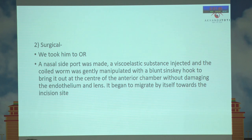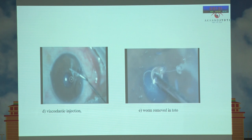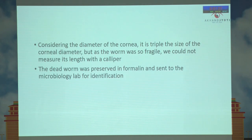We took him to the OR, where a nasal side port was made. We were able to detach the worm from the angle using a Sinsky hook, and the worm was freely floating in the anterior chamber after injecting viscoelastic substance. The worm was removed in total. Considering the diameter of the cornea, it was approximately triple the corneal diameter, but the worm was so fragile we could not measure the length with calipers. The dead worm was preserved in formalin and sent to the microbiology lab for identification.